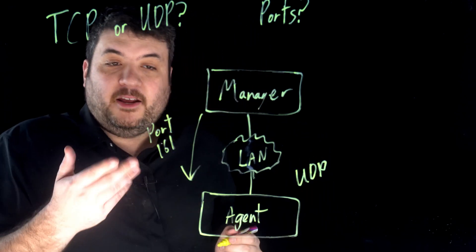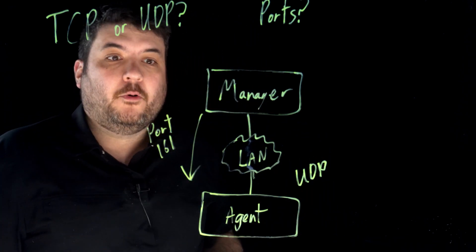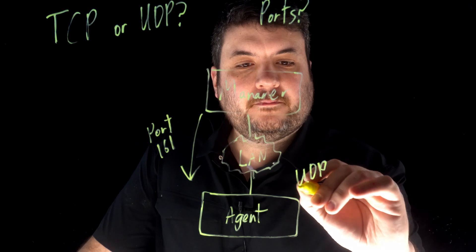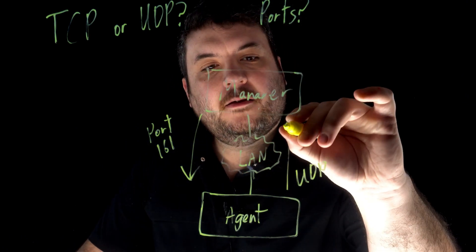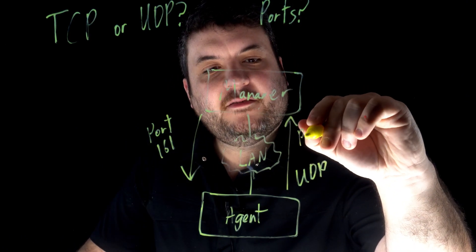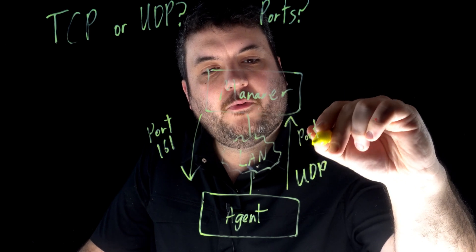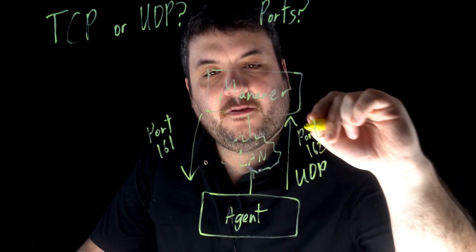Then when the agent has something to send — either a reply or an asynchronous trap — it is going to send that message back on port 162.